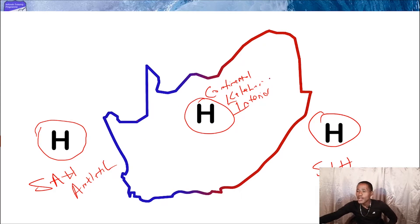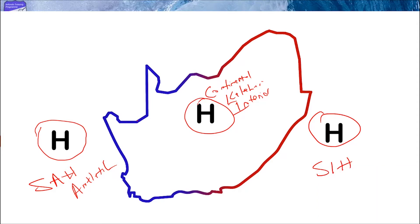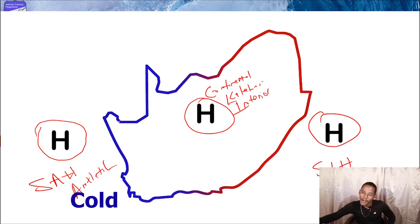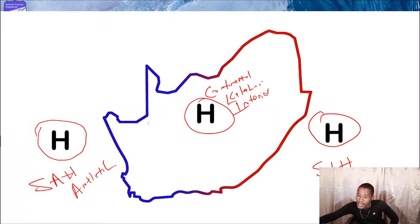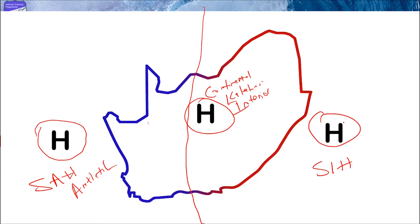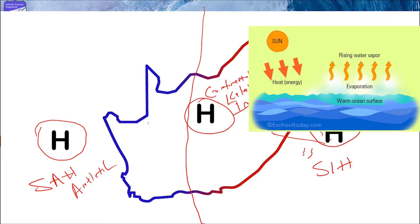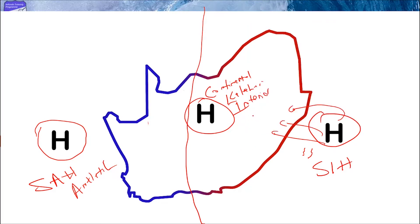Between the Atlantic Ocean and the Indian Ocean, which one is warm and which one is cold? The Atlantic Ocean is colder and the Indian Ocean is warm. If we were to cut South Africa in half, when the air moves from the South Indian High towards the land, it brings a lot of moisture because the ocean is warmer, hence there is a lot of evaporation. The moisture moves towards the land, which is why the eastern part of South Africa experiences more rainfall than the western side — so the western side is drier.